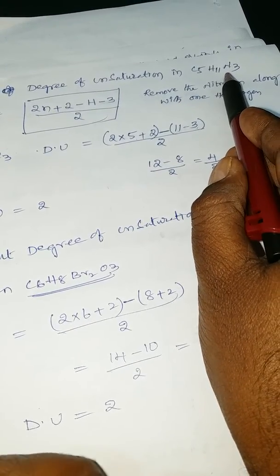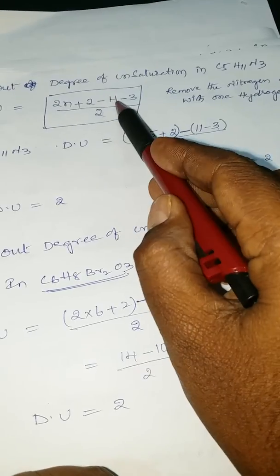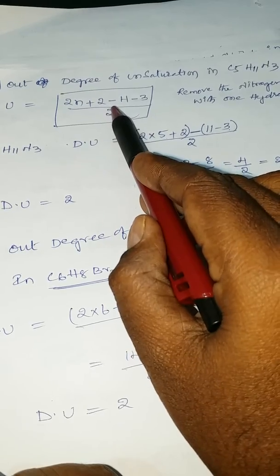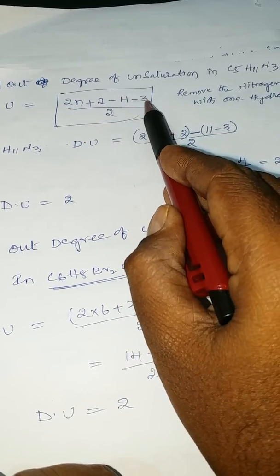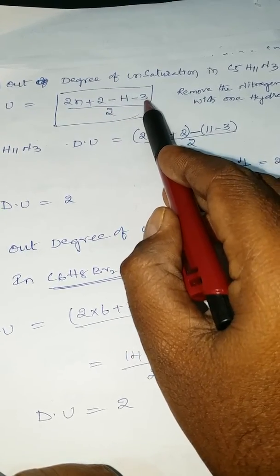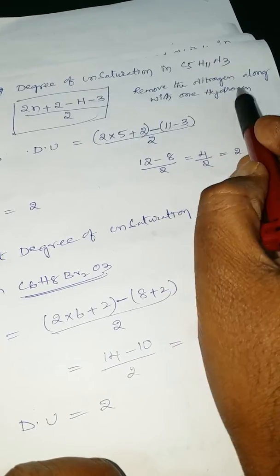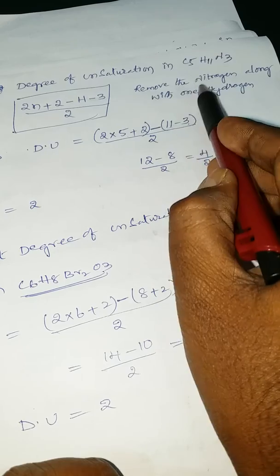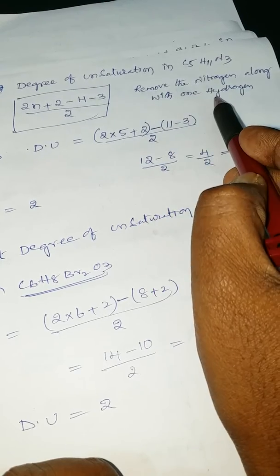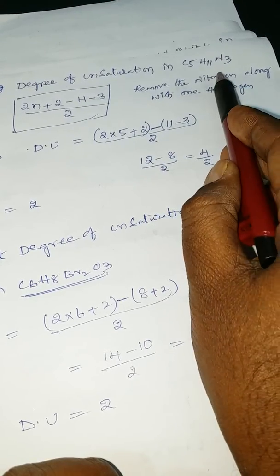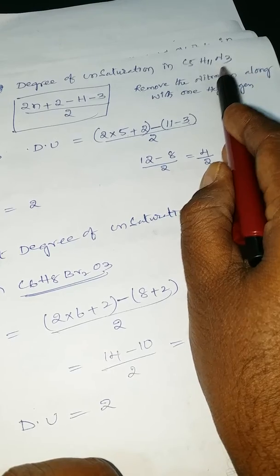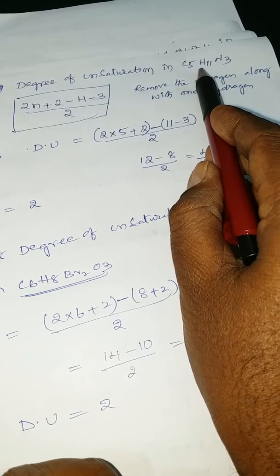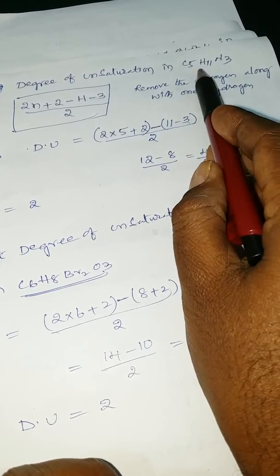In the presence of nitrogen, that means minus 3 hydrogens. So the formula becomes 2N plus 2 minus H minus 3. That means: remove the nitrogen along with 1 hydrogen. Since 3 nitrogens are there, out of 11 hydrogens, remove the 3 hydrogens.